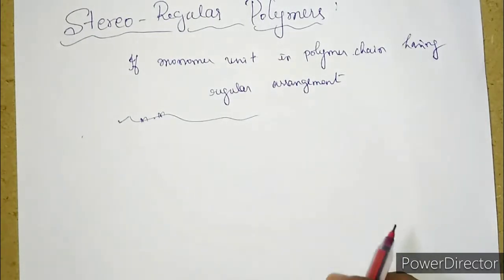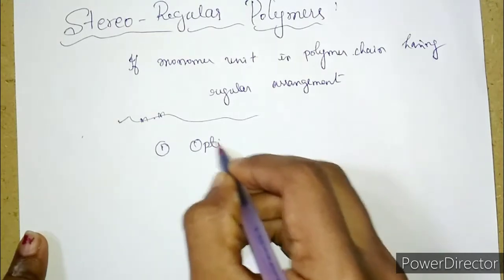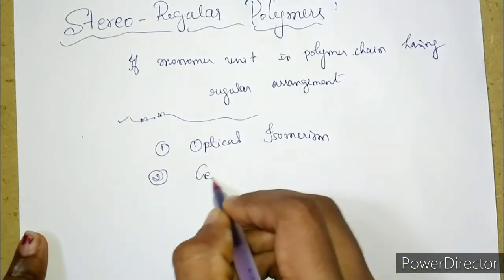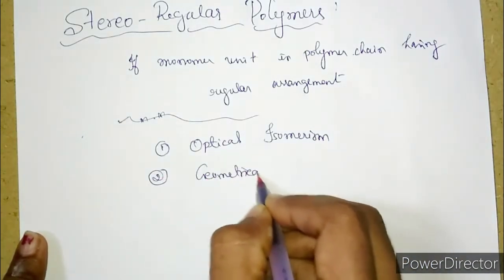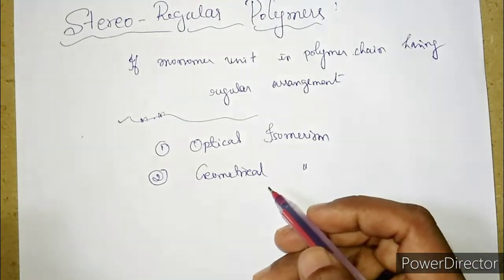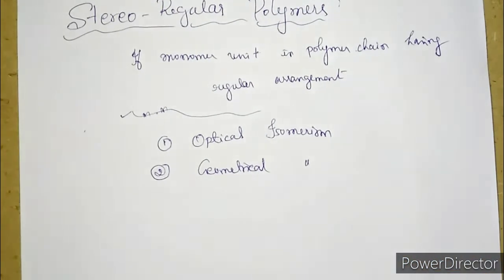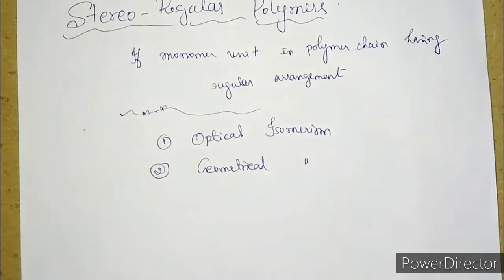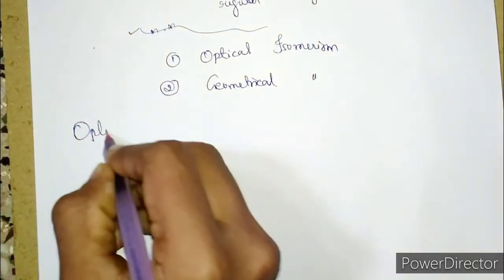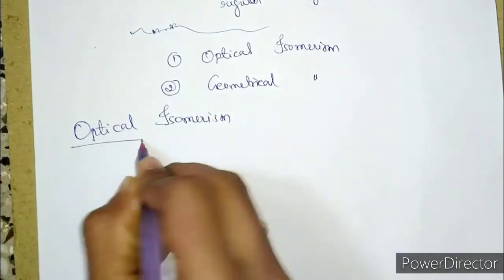Stereo regularity in the polymer arises because of optical isomerism or it may be because of geometrical isomerism. These are the two factors that will determine the stereo regularity of the polymer. In this class we will mainly focus on optical isomerism in the polymers, and in the next video we will talk about geometrical isomerism.